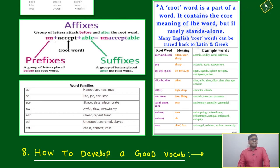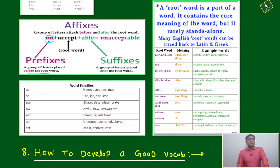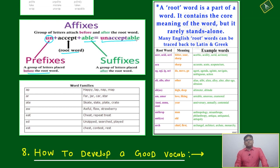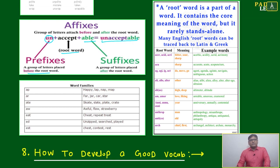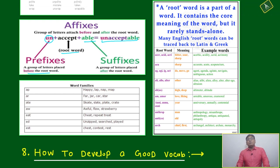Let's take one word: 'unacceptable'. 'Un' is the prefix — the group of letters placed before the root word. 'Accept' is the root word. 'Able' is the suffix. So 'unacceptable' is a combination of prefix, root, and suffix.